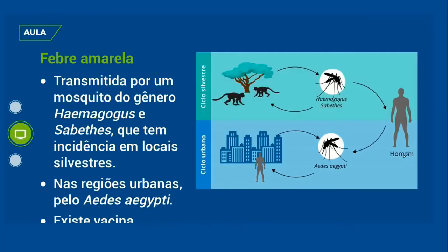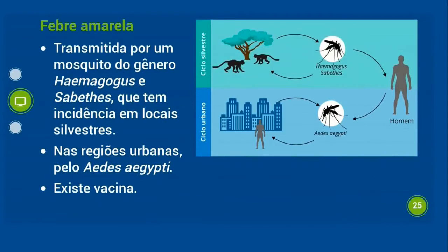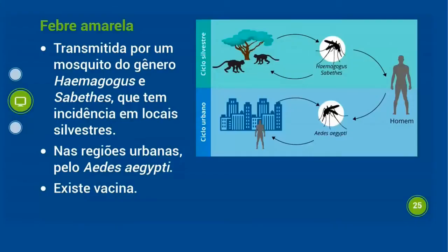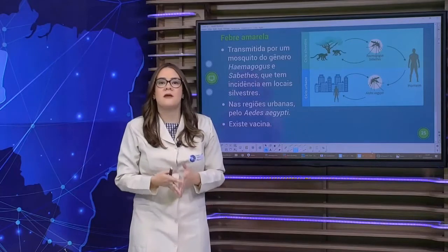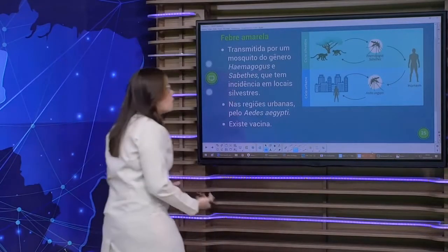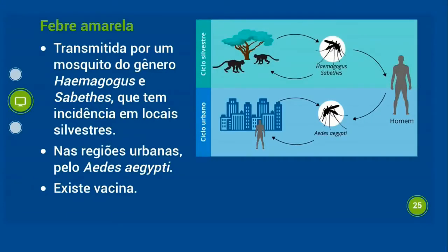Vamos falar agora sobre a febre amarela. A febre amarela também é transmitida por mosquito — na região de floresta, do gênero Haemagogus ou Sabethes, com incidência em lugares de floresta. Nas cidades, o mosquito intermediário pode ser o Aedes aegypti, o mesmo que transmite dengue, Zika e Chikungunya. Por isso tivemos inúmeros casos de febre amarela em São Paulo e Rio de Janeiro. A febre amarela tem vacina, mas é importante também prevenir a reprodução do mosquito.